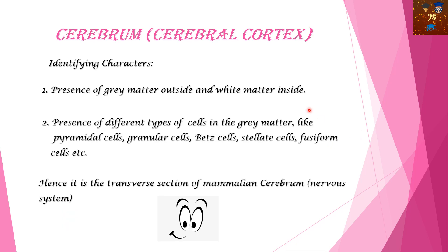Here the identifying characters for cerebrum: presence of gray matter outside and white matter inside, with different types of cells in the gray matter — pyramidal cells as the main cell, then granular cells, small spotted cells, bed cells, stellate cells, and fusiform cells. Hence it is the transverse section of the mammalian cerebrum of the nervous system.